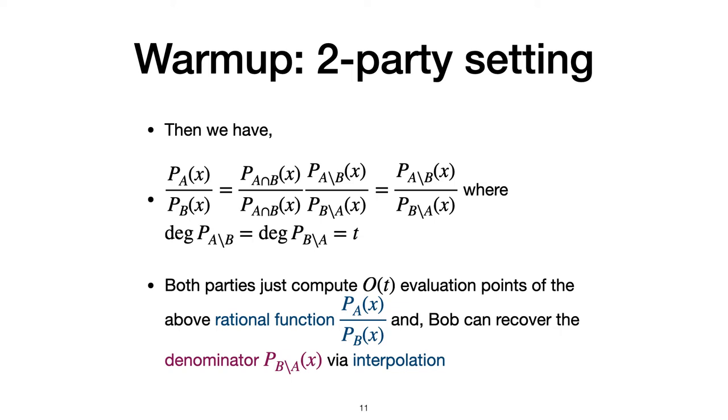A low degree rational function means its numerator and its denominator are of low degree polynomials. Here it means Pa minus b and Pb minus a are two T degree polynomials, where T is the threshold. Therefore, both parties can firstly compute all of T evaluation points of the rational function Pa over Pb. Then one party, say Bob, can recover the denominator via interpolation, which will reveal the intersection when compared to his own set.